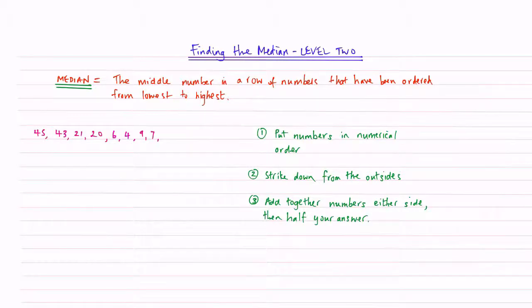Okay, so let's have a look at our final example. So step one, we're going to put these in numerical order. So we've got a 4 and then the next one is a 6. Then we have a 7. Then we've got a 9. Strike that one through.